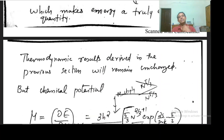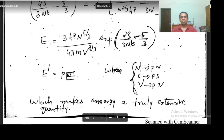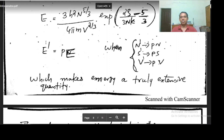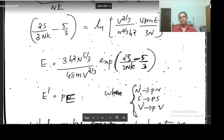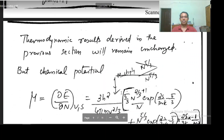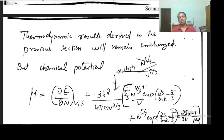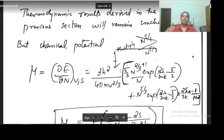The thermodynamic results derived earlier in the previous section will remain unchanged — there will not be any change. If we calculate the thermodynamic properties from this, we will get the earlier results. But there we had not calculated chemical potential mu.